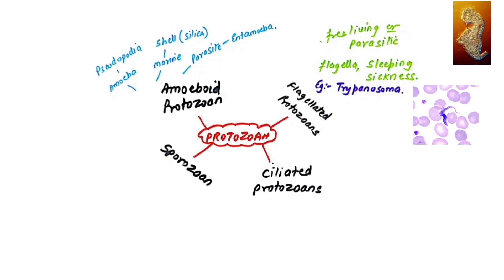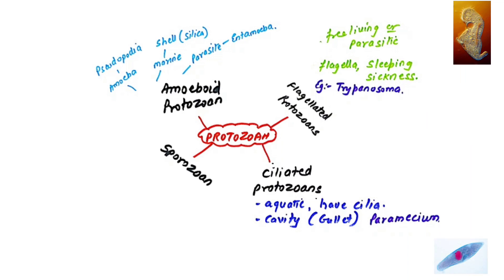When I say ciliated protozoan, these are aquatic. They have cilia and a cavity called gullet. An example is Paramecium. You all have seen slipper-shaped Paramecium which has cilia, and it is a ciliated protozoan.